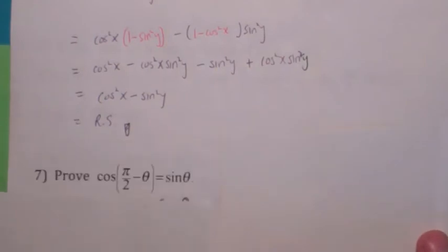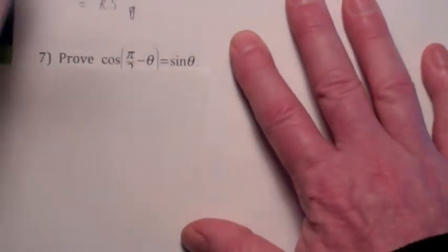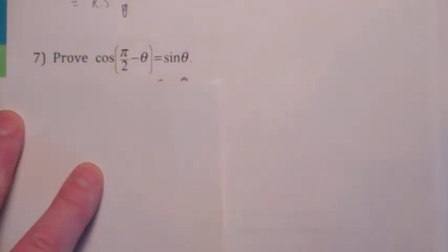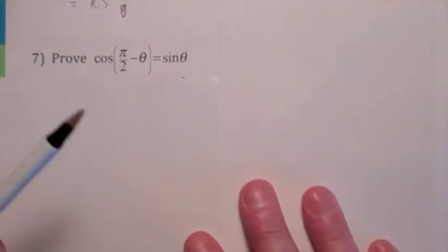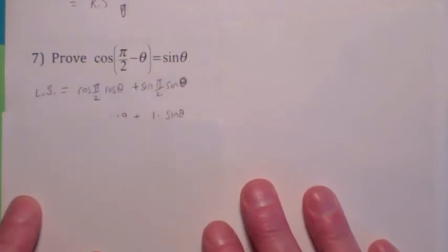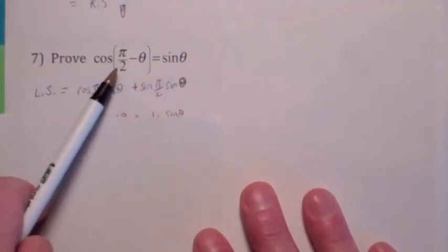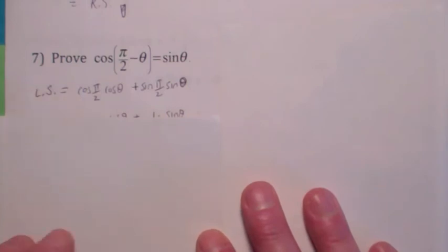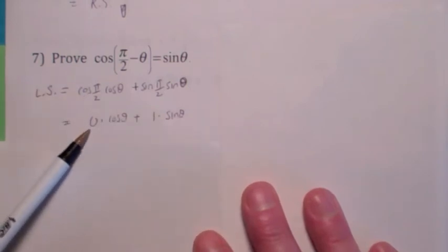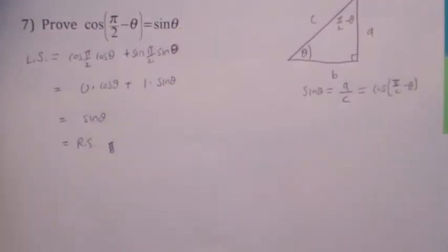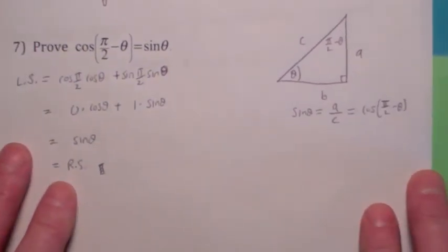Here's one of those co-function identities. Think about this in terms of a right triangle — the cosine of the complement of an angle is the sine of the angle. But you could also apply the difference formula for cosine: cosine of the first, cosine of the second, plus sine of the first, sine of the second. The cosine of π over 2 is 0, and the sine of π over 2 is 1. So that's an easy way to prove it by using the addition formula for cosine.